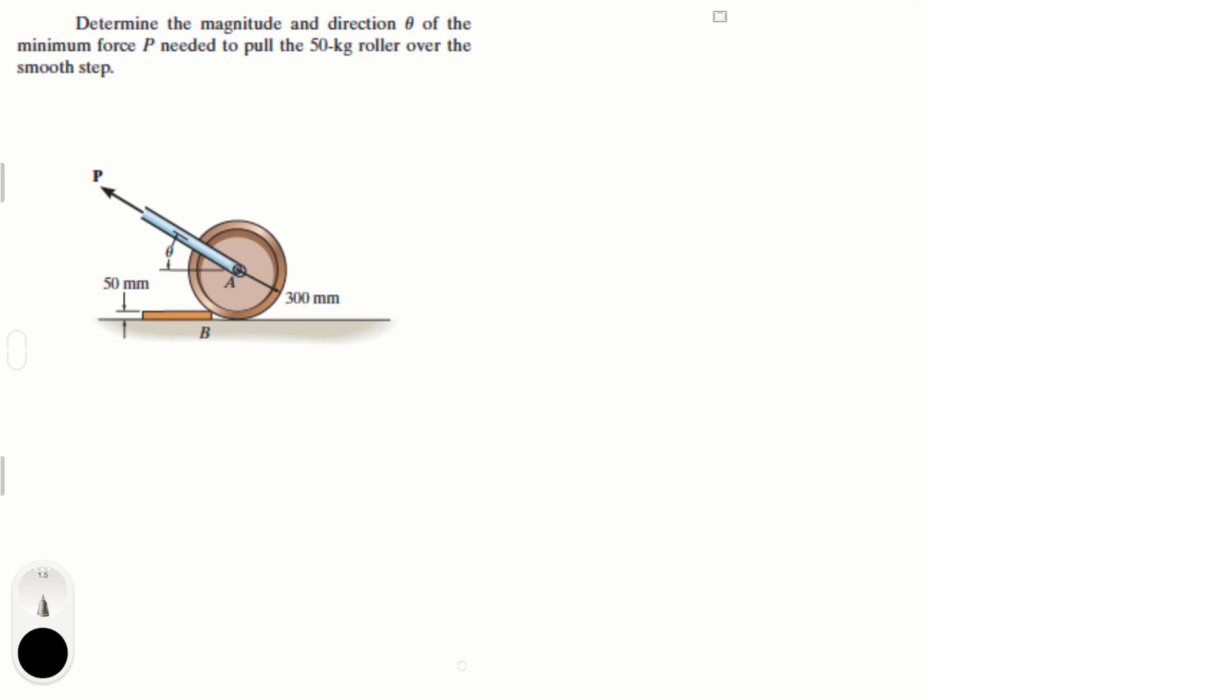All right, let's do this problem that says determine the magnitude and direction theta of the minimum force P needed to pull the 50 kilogram roller over the smooth step. We did a problem a second ago where theta was given but this time we have to determine which one is the angle theta to have the minimum amount of force. This is kind of a cool problem because how often are we trying to roll something over a small step and we can't really figure out the angle. Let's get to it.